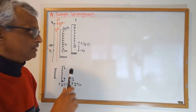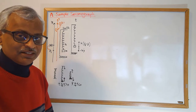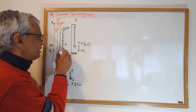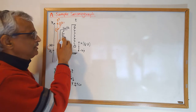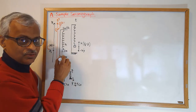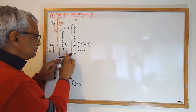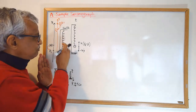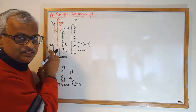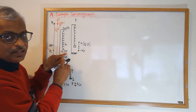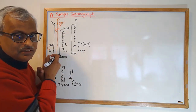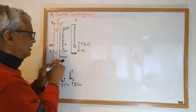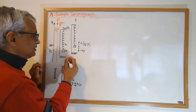We're going to talk about a simple seismograph. A block is attached to a spring that is attached to a support, which is attached to the ground. When the ground moves, the support moves, and this affects the length of the spring — the distance between where the block is and where the support is — and in that way it affects the motion of the block.